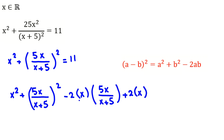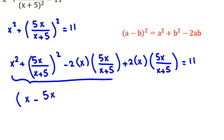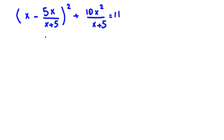Adding and subtracting the 2ab term has no net effect. Using the identity, this becomes (x minus 5x over (x plus 5)) squared plus 2 times x times (5x over (x plus 5)) equal to 11. Simplifying: 2 times 5 is 10, so we get 10x squared over (x plus 5) equal to 11.